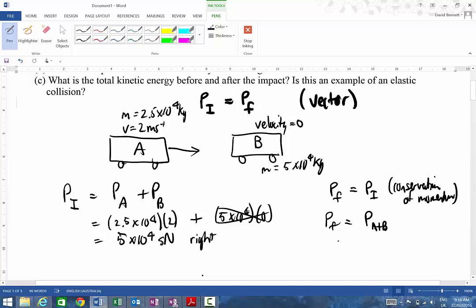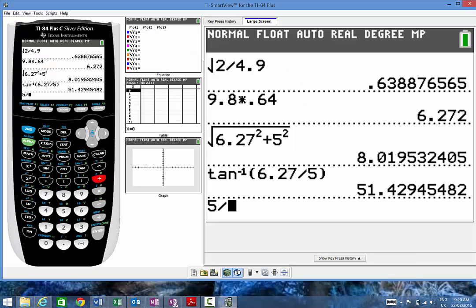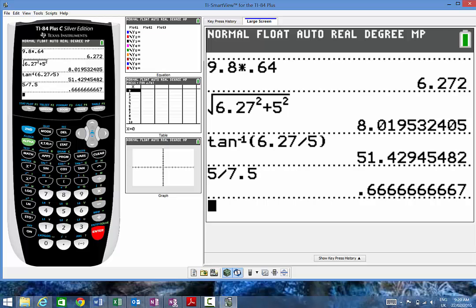All we're wanting to try and find is what is going to be their final velocity. That's the sort of question that you might get. So if we're looking at over here, we know the two masses are going to be added together, so that's going to be 7.5 by 10 to the 4, and we don't know the final velocity but we know the answer over here is going to be 5 by 10 to the 4.